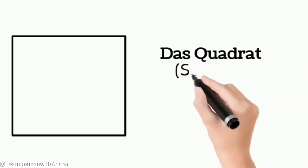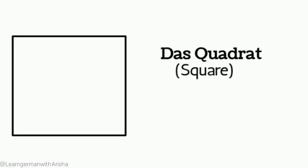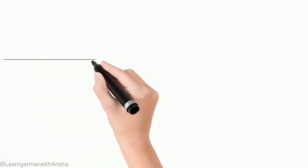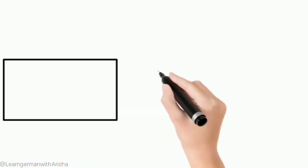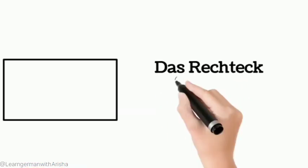Our first one is square, das Quadrat. Then our second one is rectangle, das Rechteck.